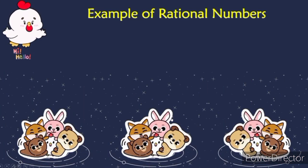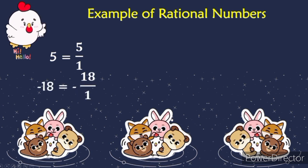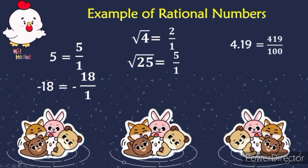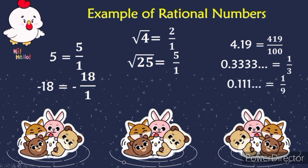Now let's have example for rational numbers. First, we have 5 or we can express as 5 over 1. Negative 18 can be expressed as negative 18 over 1. Square root of 4 is equal to 2 or can be expressed as 2 over 1. Then we have square root of 25 is equal to 5 or can be expressed as 5 over 1. 4.19 is equal to 419 over 100. 0.3333 and 3 dots can be expressed as 1 over 3. And lastly, 0.111 and 3 dots can be expressed as 1 over 9.